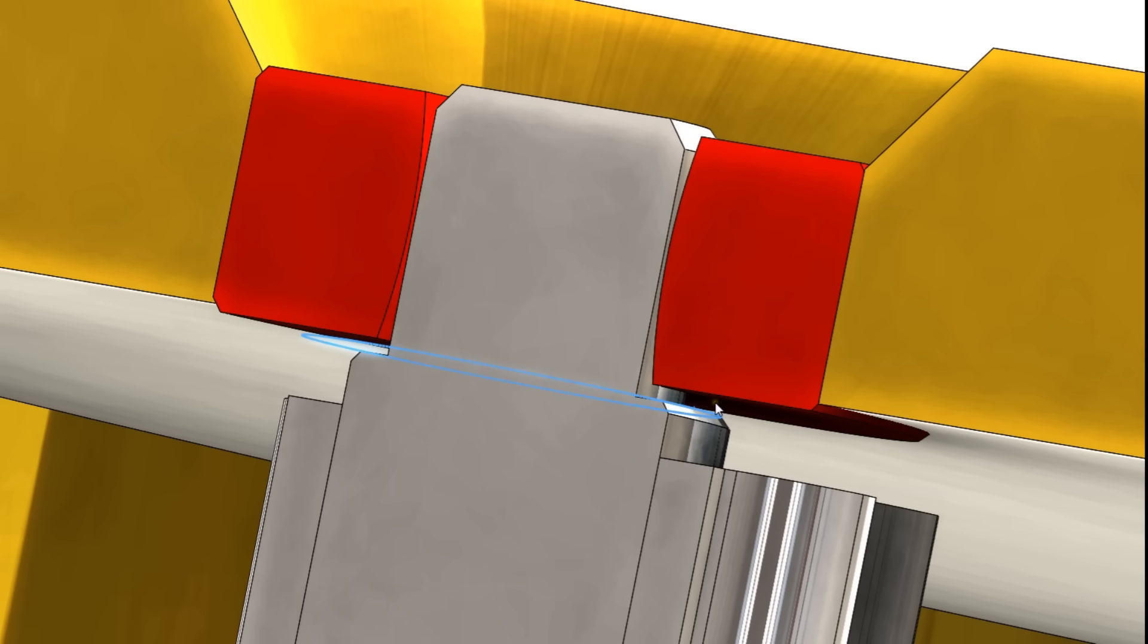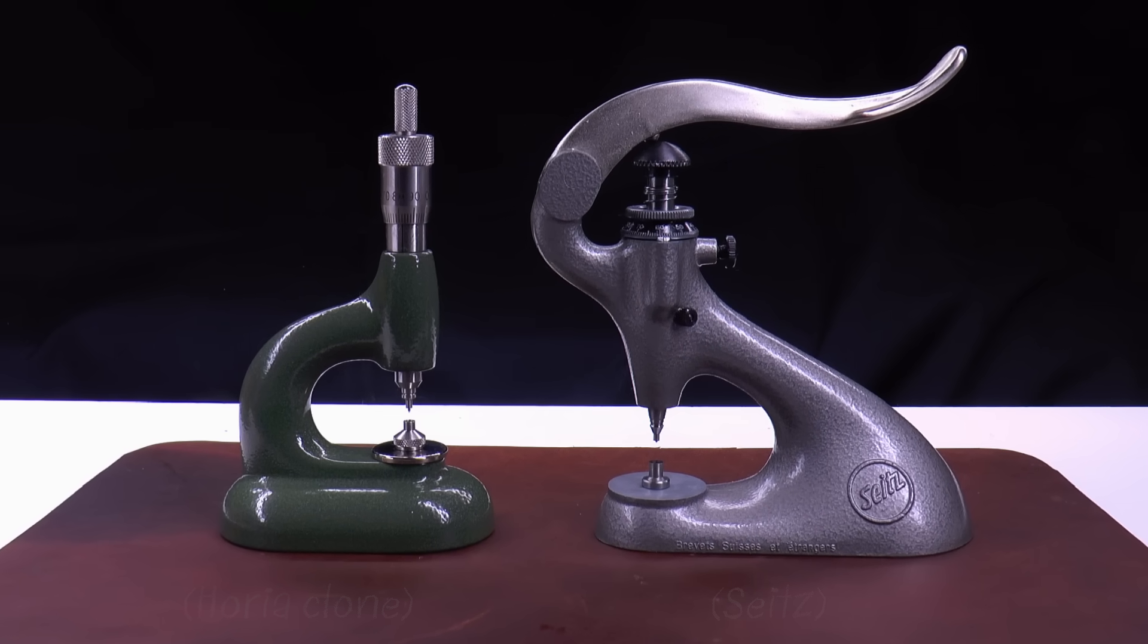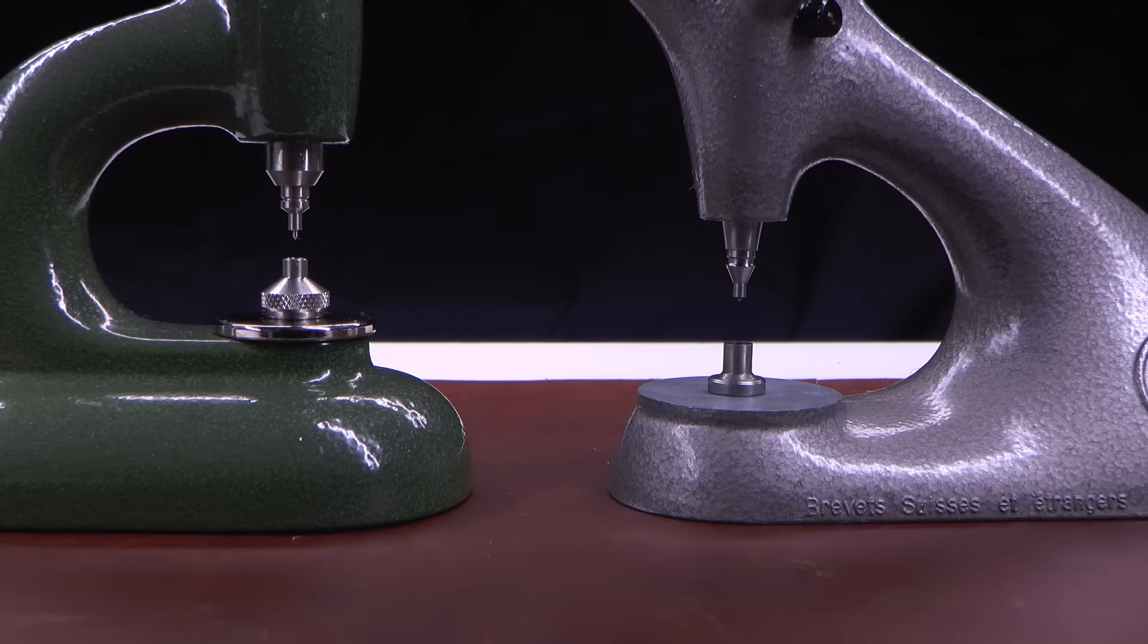So right away it's clear that successfully press fitting a jewel requires carefully applying a light assembly pressure. Typically that job is performed by quite specialized watchmaker tools that use what's known as pushers and anvils to control how force is applied to both the jewel and the receiving plate.